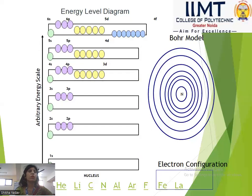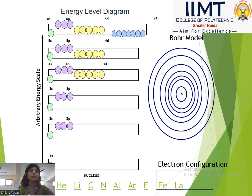While revolving in its orbit, the electron is not in a position to either gain or lose energy — its energy remains stationary. This is the Bohr model, and in 1913 Niels Bohr gave this theory regarding the distribution of electrons.